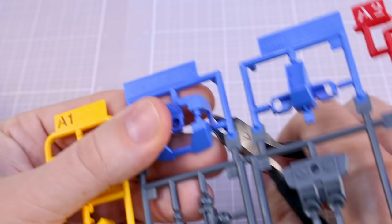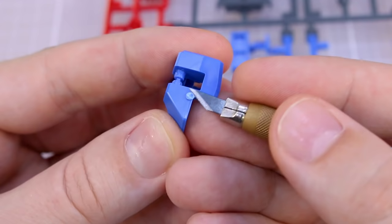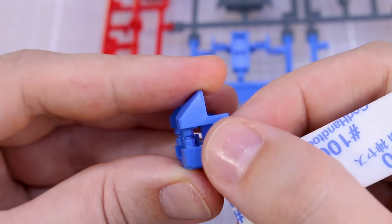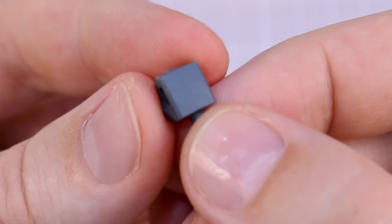So with your nippers, you're going to want to cut slightly away from the part, leaving a little bit left over. So what is left over, it can then simply be removed safely with a knife. And if it's still not quite close enough, you can use a sanding paper or a sanding sponge to sand that a little bit further.